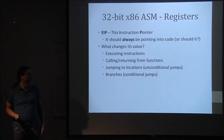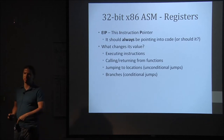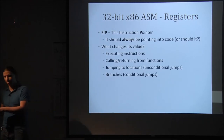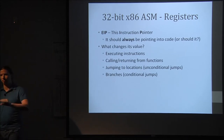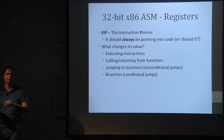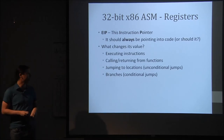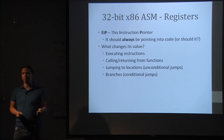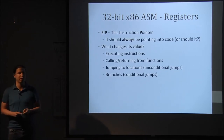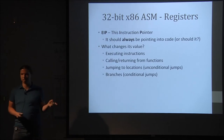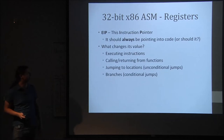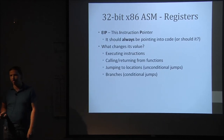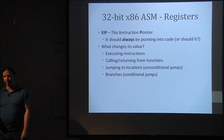The instruction pointer points at where code is being read from into the processor — the assembly, loading it up, running it. This is supposed to stay looking at code that is executable, with read access, being sent to the processor at all times. You cannot directly move this register; you have to do it via calls, jumps, or branches. You can't physically manipulate it without using an assembly directive.